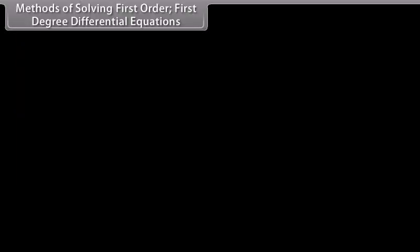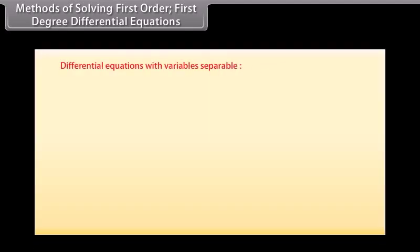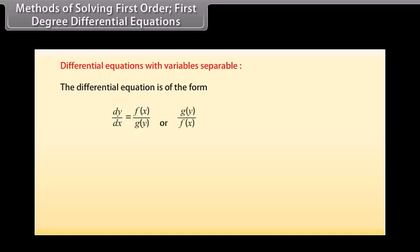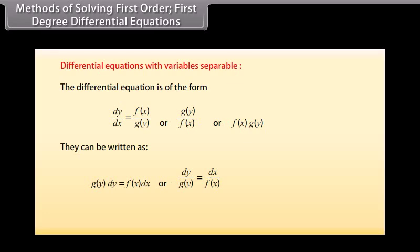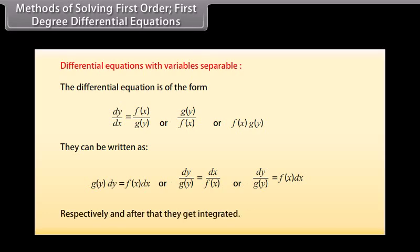Methods of solving first order, first degree differential equations. Differential equations with variables separable: the differential equation of the form dy/dx = f(x)/g(y), or g(y)/f(x), or f(x)·g(y) can be written as g(y)dy = f(x)dx, or dy/g(y) = dx/f(x), or dy/g(y) = f(x)dx respectively, and after that they are integrated.